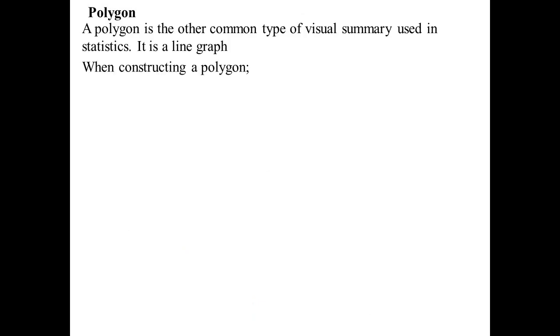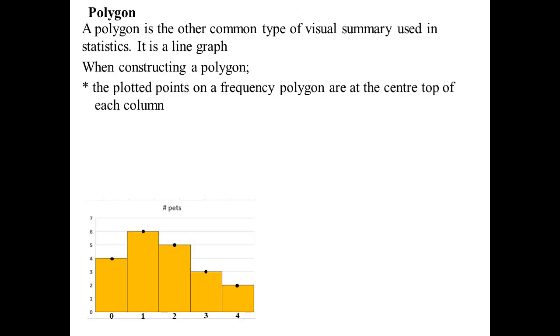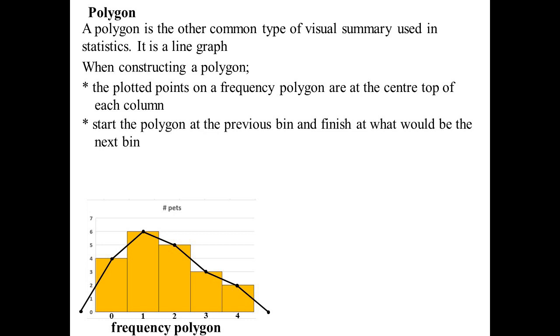The polygon is like the line graph. Our rules: you plot the points at the center of each column, and that's why it's important to center the column on the number, so that way that point is directly above the number. So there's our pet example. I would plot at the center of each of those columns. But you start and finish it at where the next bin would be. So we don't have one for five; technically the frequency is zero, so we would join it up to zero. And I know it sounds crazy, but negative one would have a frequency of zero as well. We would join that up as well, and then that would be our frequency polygon.